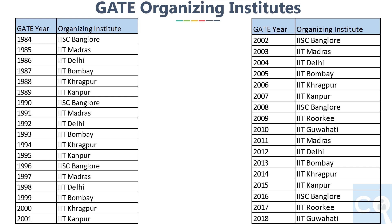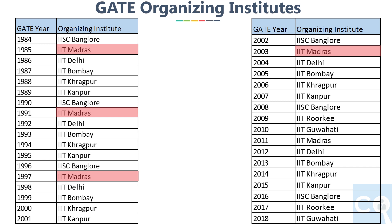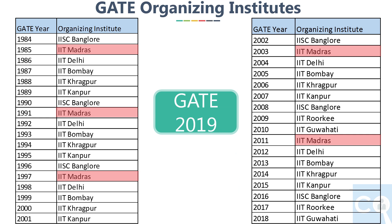First of all, we will see in which years IIT Madras has organized the GATE papers. Since earlier, only IISc and IIT Bombay, Kanpur, Kharagpur, Delhi, and Madras were the institutes who had the right to organize GATE — meaning after every 6 years, the Organizing Institute would repeat itself. So it started with 1985, then 91, then 97, then 2003. After that, IIT Guwahati and IIT Roorkee were also included. So IIT Madras's turn came after 8 years in 2011, and now again it will come after 8 years in 2019.